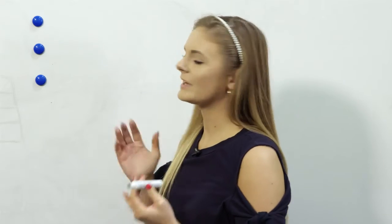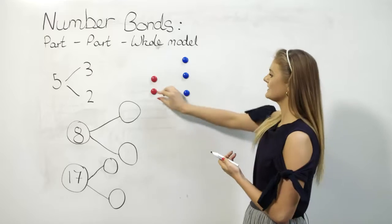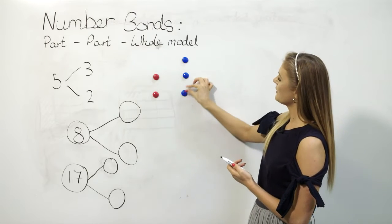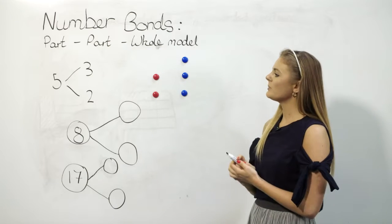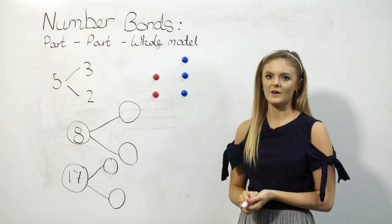It's really important to introduce this concept using concrete resources to develop children's understanding. Here I've got counters—you can be more inventive than this—but I've got 2 here and 3 here, two parts which equal a total of 5.